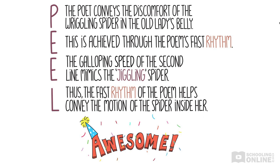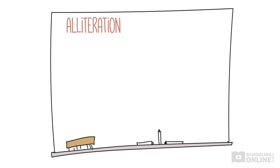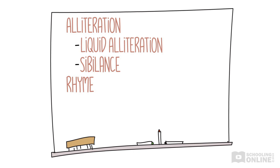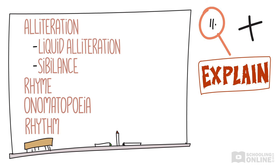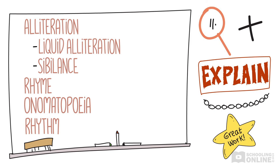Let's recap. In this lesson, we've looked at alliteration, including liquid alliteration and sibilance, as well as rhyme, onomatopoeia and rhythm. When you mention these in your essays, don't just identify these techniques — make sure you explain their effect too. Try to link your explanation of techniques with the poet's overall message. You can use the PEEL structure to help you do this. Now you're ready to have fun reading all kinds of poems.